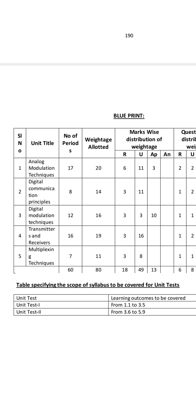Fourth chapter: Transmitters and Receivers — a very, very important chapter. Why? Two 8 mark questions, which is 16 marks, and one short answer question. You can learn the chapters. Fourth chapter is a must and should — it is the easiest and most scoring chapter. Fifth chapter: Multiplexing Techniques.